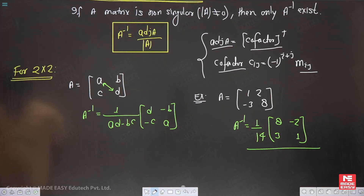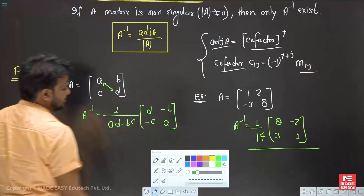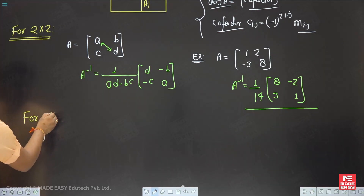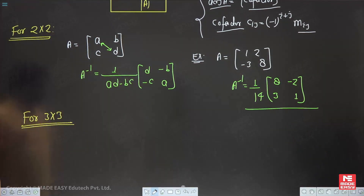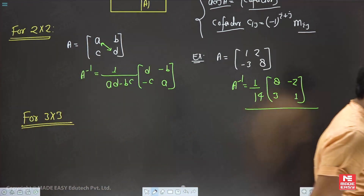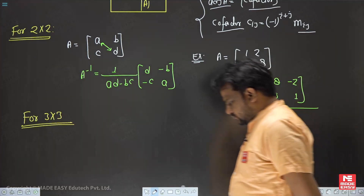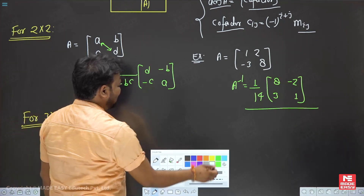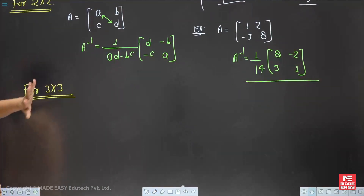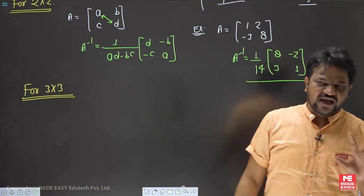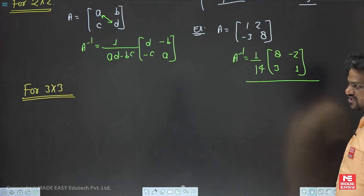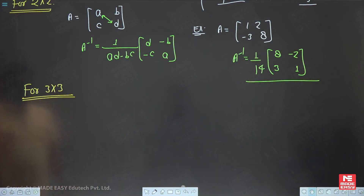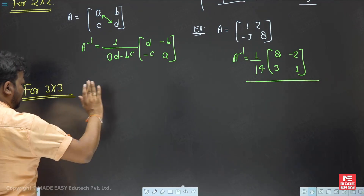Now the main question is how to calculate A inverse for a 3×3 matrix. Let's see how we are going to find the 3×3 matrix inverse in a single minute. Let's take an example — just look at the board first, don't write anything.